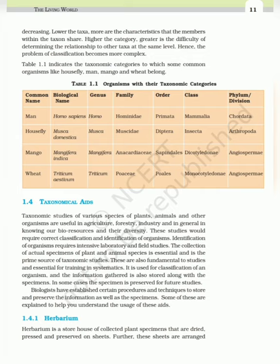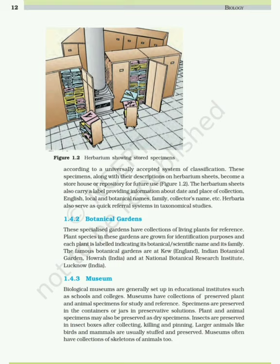A herbarium is a storehouse of collected plant specimens that are dried, pressed and preserved on sheets. These sheets are arranged according to a universally accepted system of classification. The specimens, along with their descriptions on herbarium sheets, become a repository for future use. The herbarium sheets also carry a label providing information about date and place of collection, English, local and botanical names, family, and collector's name. Herbaria also serve as quick referral systems in taxonomical studies.